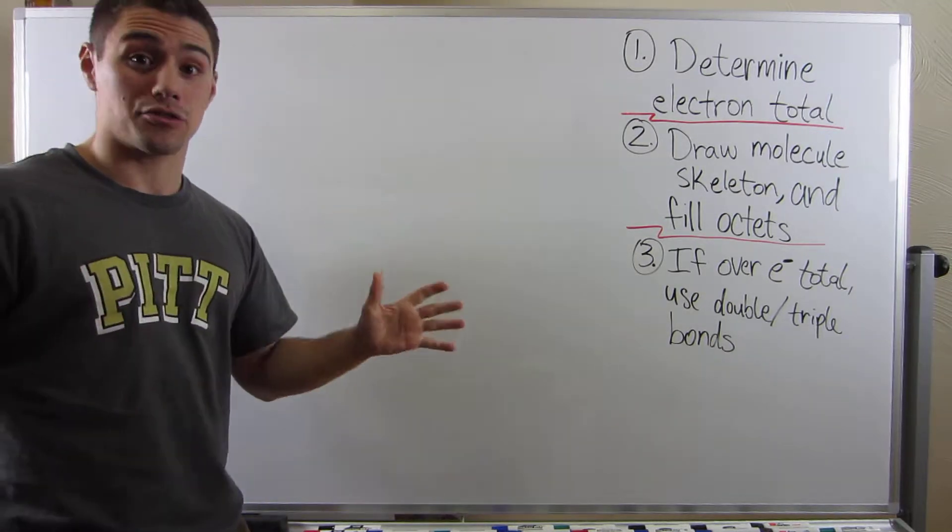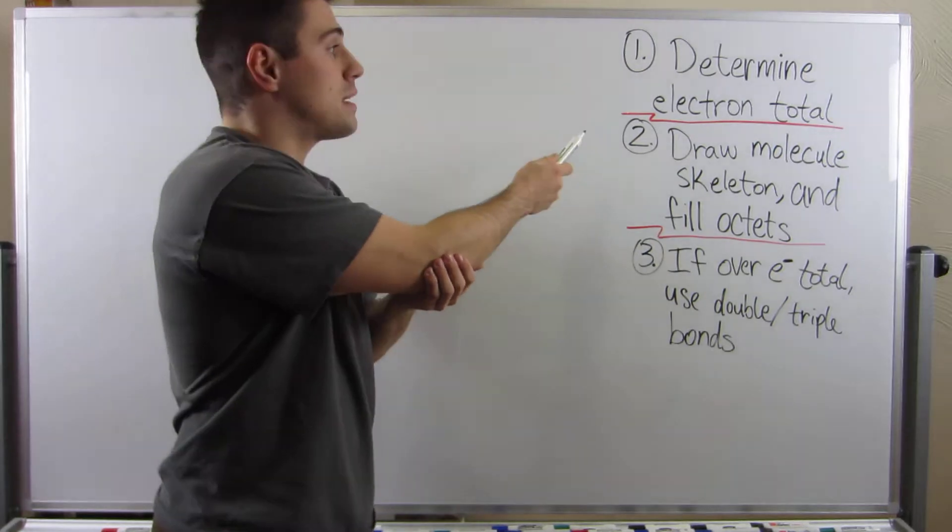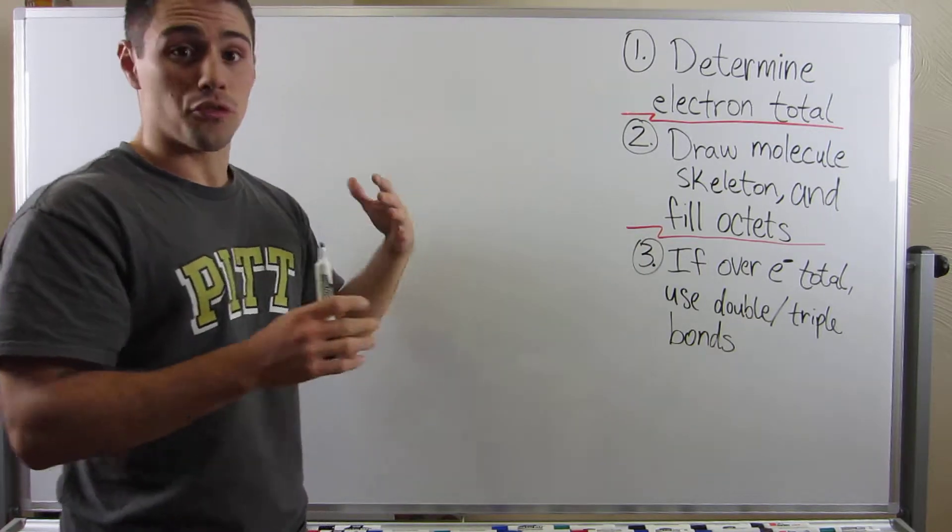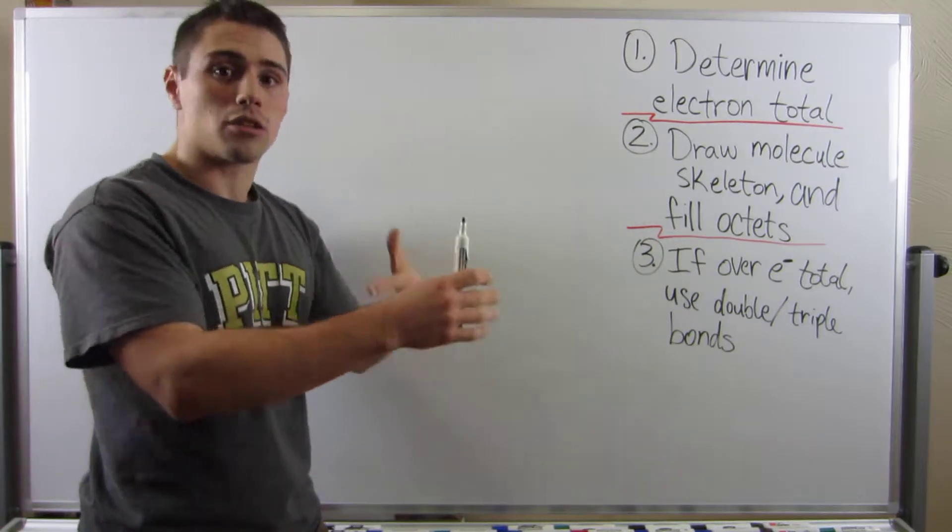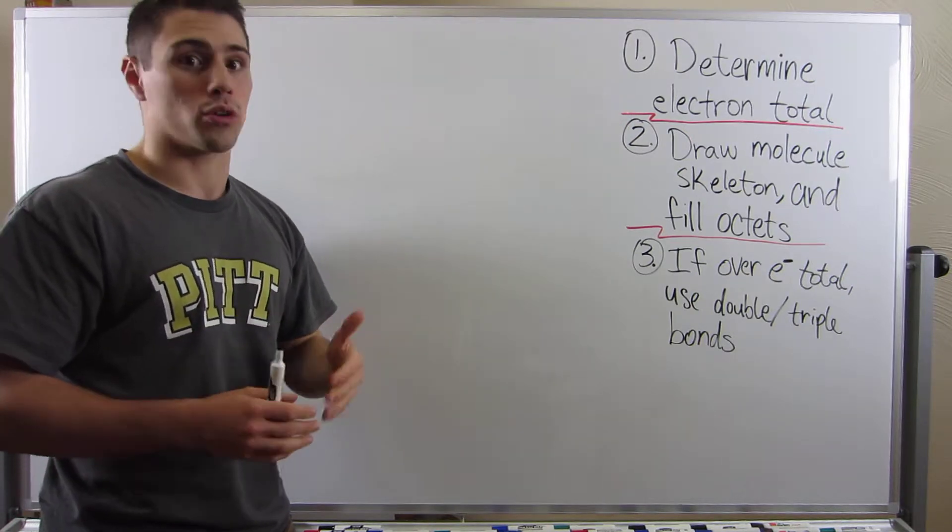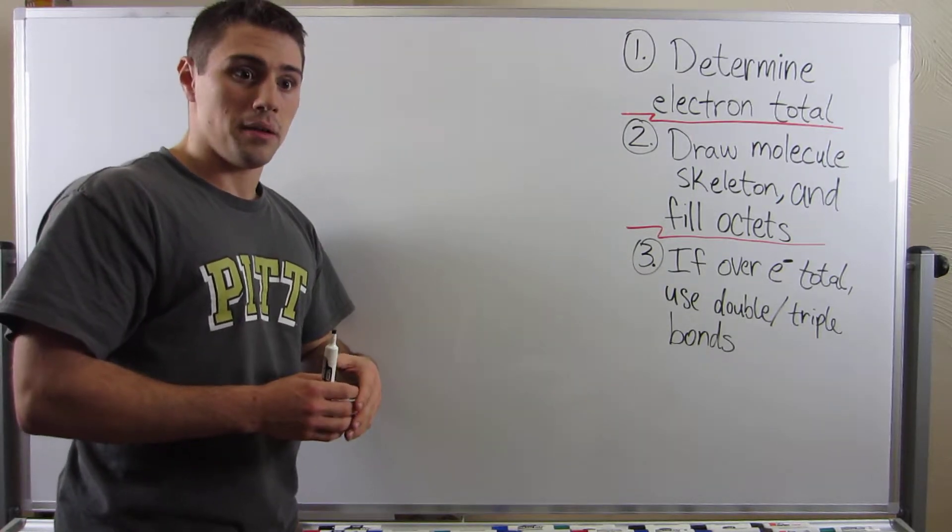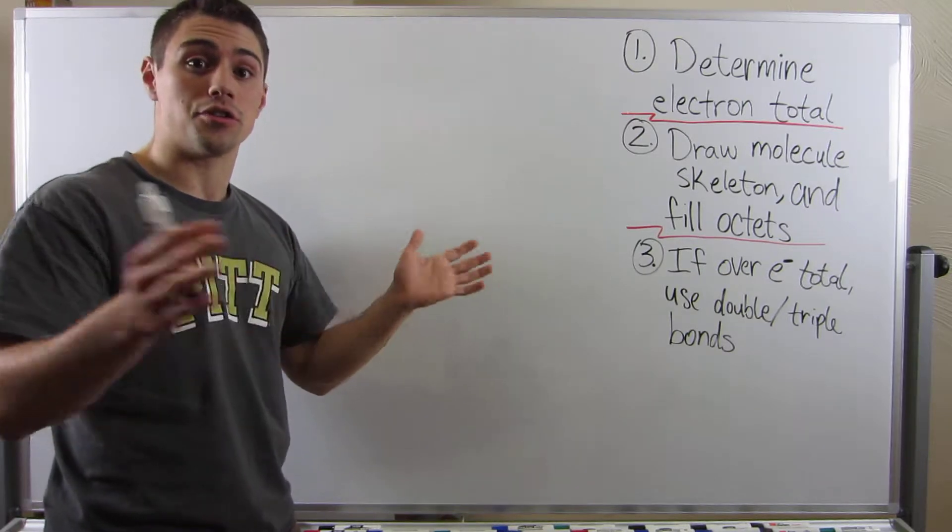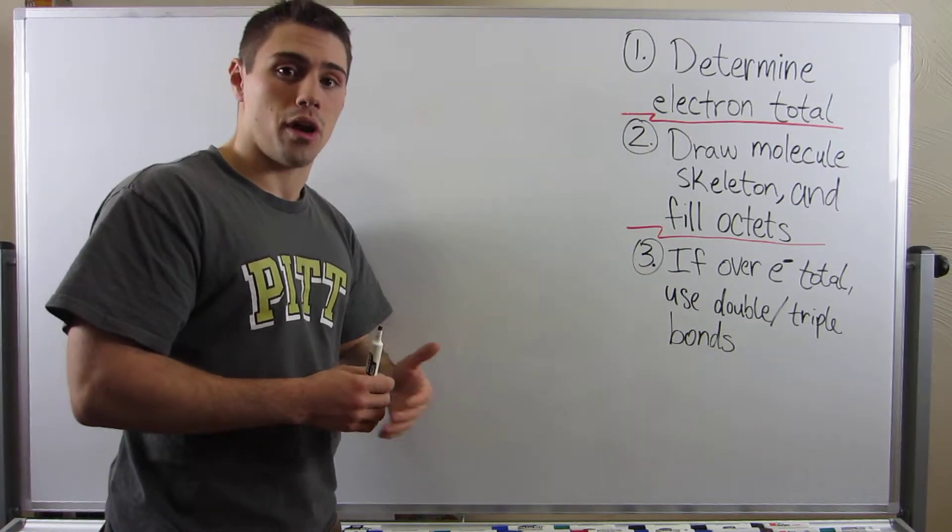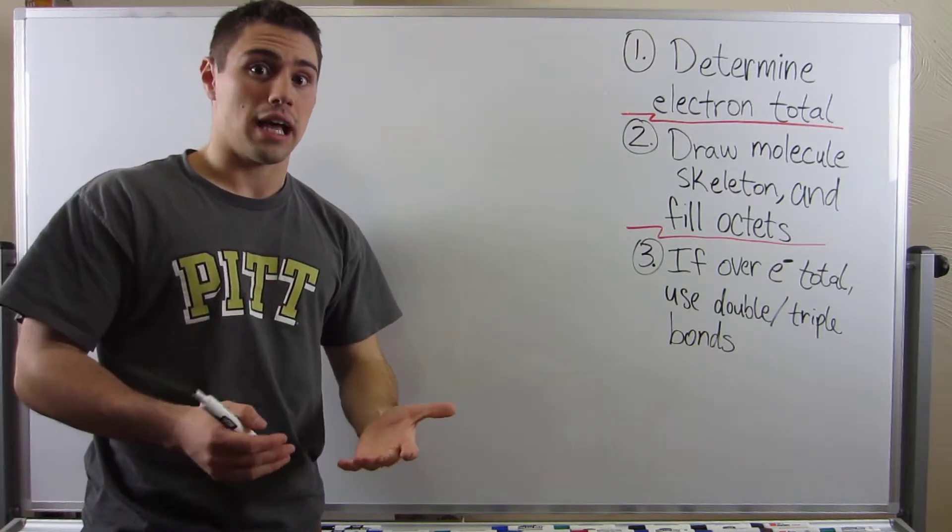The three master rules for drawing Lewis structures that are completely foolproof are over here. First, determine how many electrons you're working with so you know where to throw lone pairs and single, double, or triple bonds. Draw the molecular skeleton, just how the atoms are laid out, and then fill everybody's octet—give everybody 8 electrons, or 2 electrons to hydrogen. If you re-evaluate and count your total number of electrons, if those two numbers match, you're done. Or if you're over and you've used too many electrons, then consolidate some lone pairs into double or triple bonds if need be. While these words look nice, let's do some examples to actually see how this works.